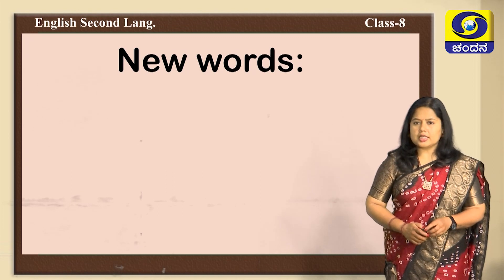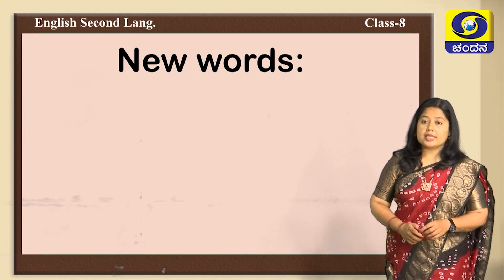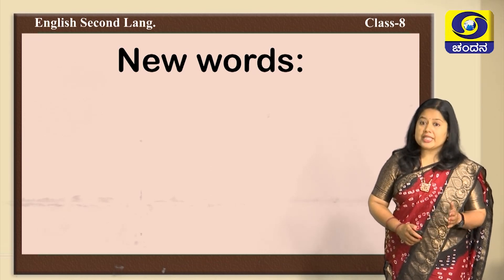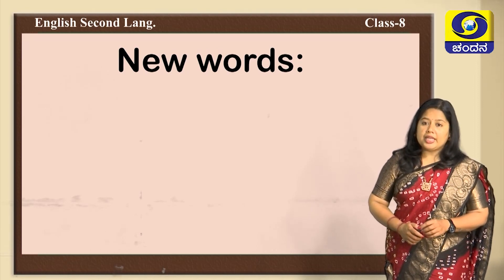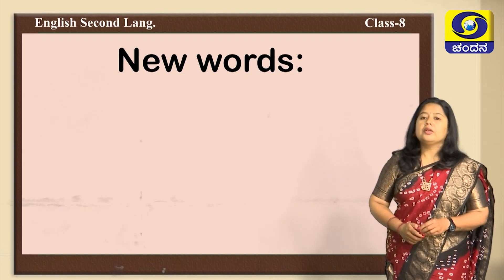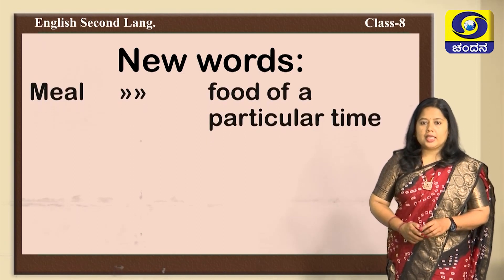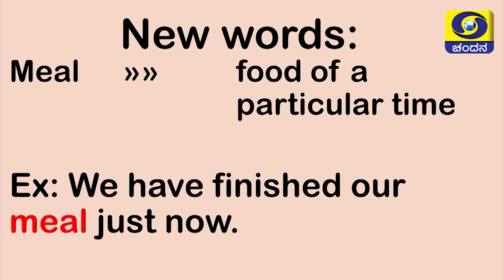Children, there are some new words that you have come across while reading the lesson. Some of those words are listed here with their meanings and example sentences for your better learning. The word 'meal' means food of a particular time. Here is a sentence: 'We have finished our meal just now' — here we are not mentioning the specific time of the food consumed, but collectively calling it a meal.